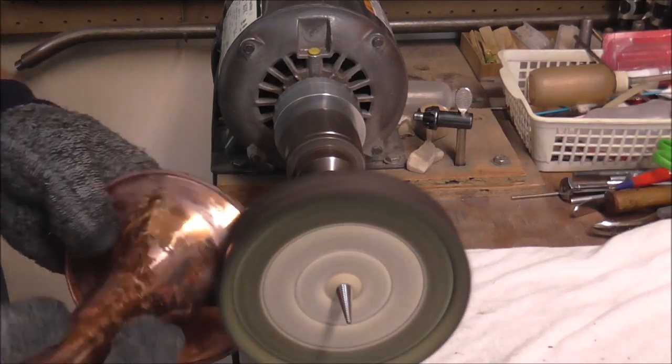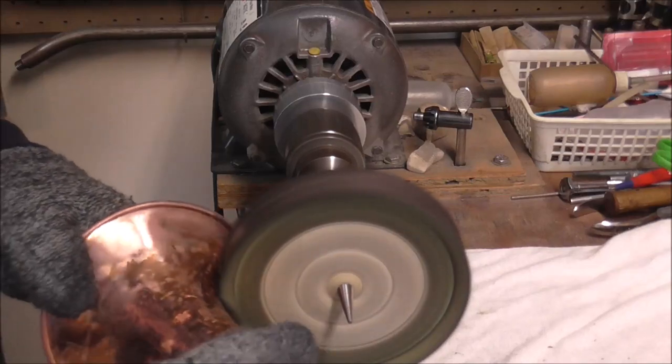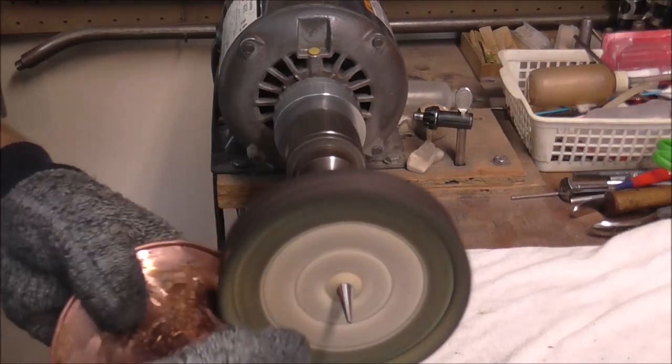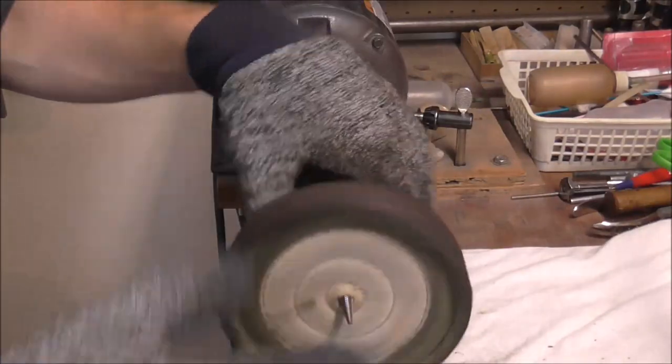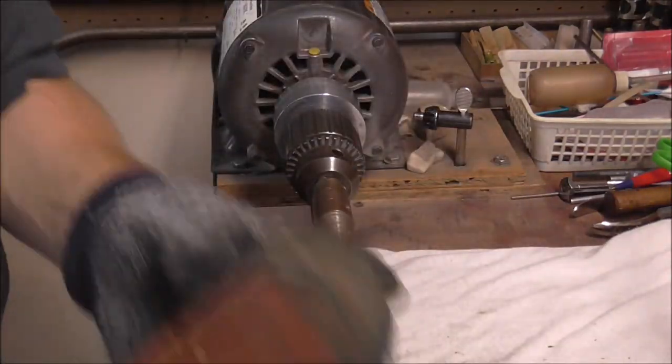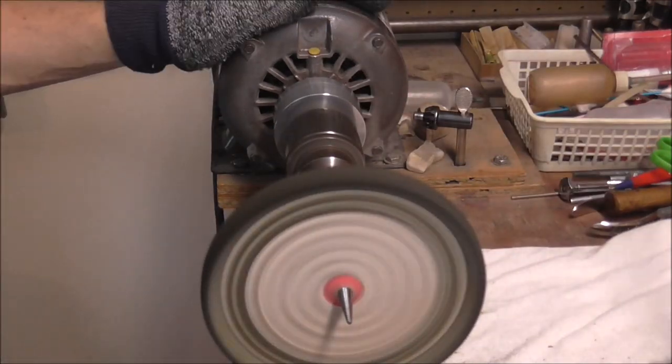But you do want to leave as much metal as you can on the bell where it's supposed to be. So what I'm doing is I'm just going over the spots with the lacquer on it. I think I might use the smaller wheel though. I'm going to switch to the smaller one. And that way I can focus on where the lacquer needs to come off better.